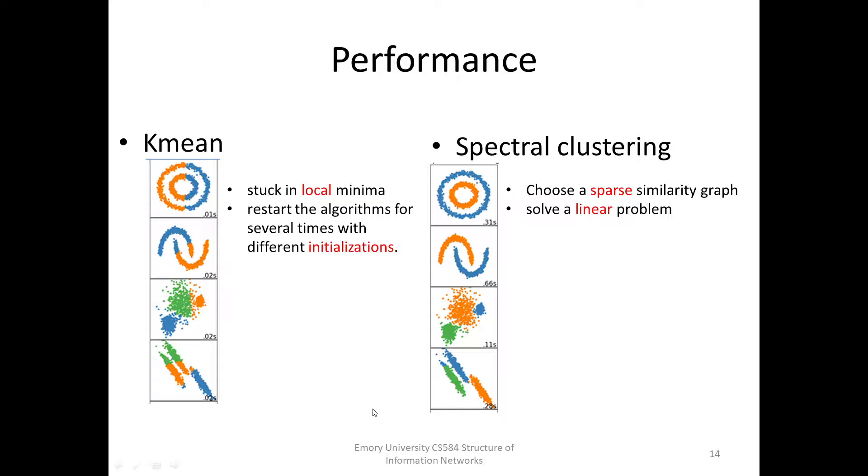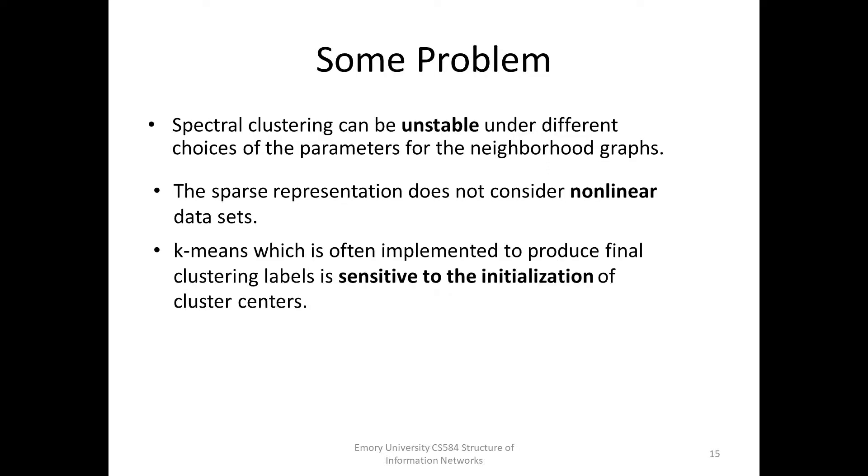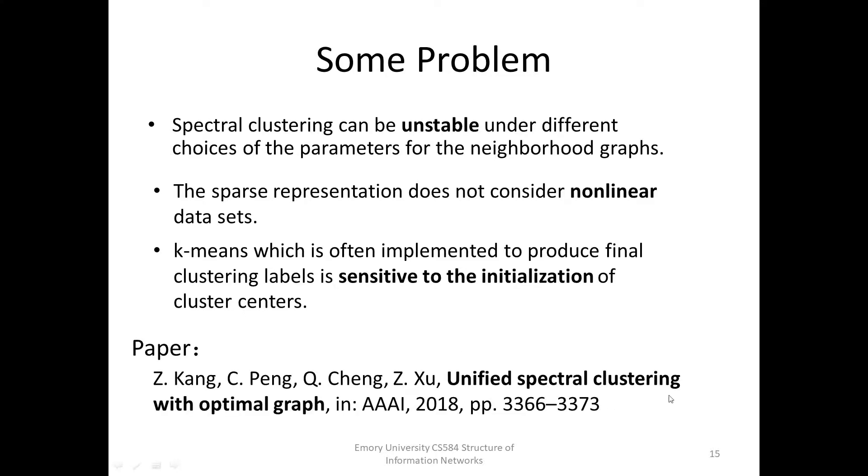Once the similarity graph is chosen, we just have to solve a linear problem. However, choosing a good similarity graph is not trivial. Spectral clustering can be quite unstable under different choices of the parameters for the neighborhood graphs. Also, sparse representation does not consider nonlinear data sets, while data points reside in a union of manifolds. Moreover, k-means is used to produce the final clustering labels, and this process has the drawback of initial sensitivity. The paper called Unified Spectral Clustering with Optimal Graph claimed that they address the above problems. So, let's see what they have done.